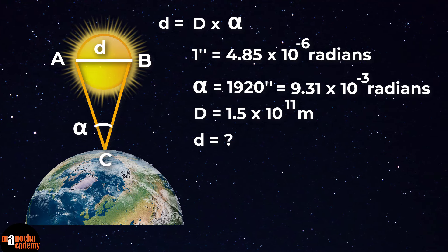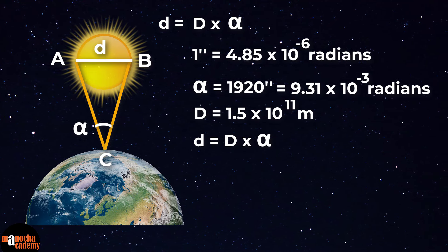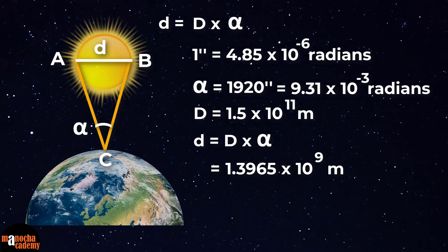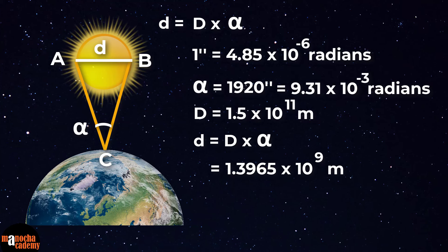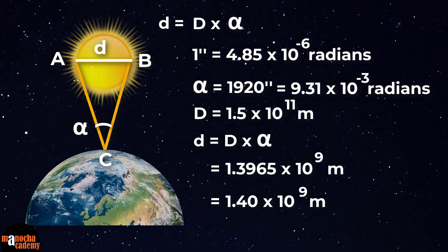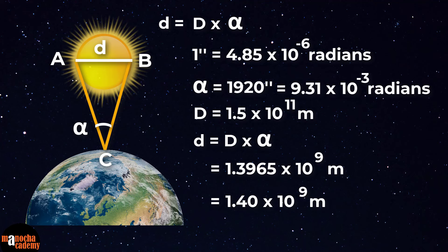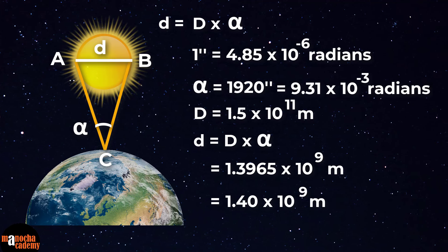So the sun's angular diameter is going to be 9.31 times 10 to the power minus 3 radians. So the sun's diameter is going to be capital D times alpha, which is 1.3965 times 10 to the power 9 meters, or we can say it is approximately 1.4 times 10 to the power 9 meters. So see we measured it using this technique.